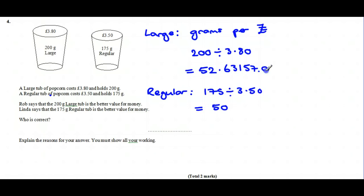So for the first one, the large one, you get 52 grams for every pound that you spend. And for this one, you get 50 grams for every pound you spend. So that means the large one is better value.